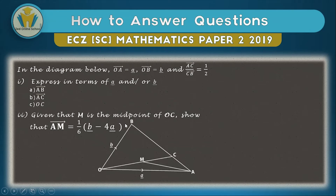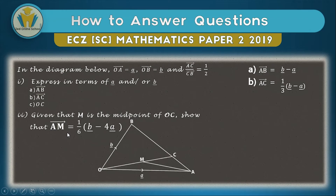For part one: AB is just the vector from A to B — use the triangle law to find it. AC is also a straightforward vector using the given information. The answers are: (a) AB equals b minus a; (b) AC equals one-third AB; and (c) OC equals one-third (2a + b). If your answers differ, write the correct ones as we'll look at the workings later.